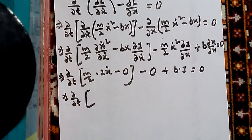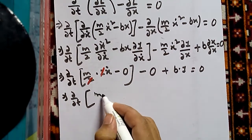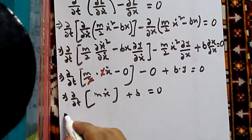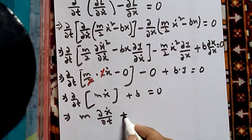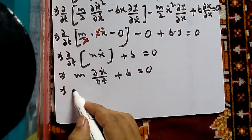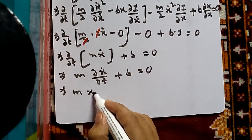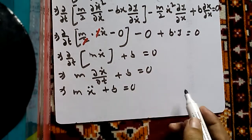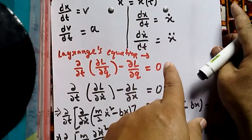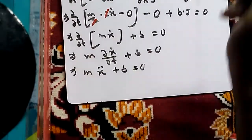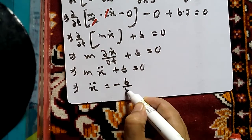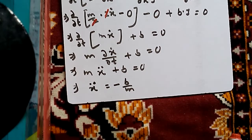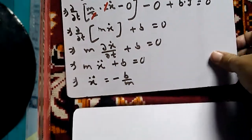The 2s cancel, giving d/dt (m · x-dot) + b = 0. Since m is a constant, this becomes m · dx-dot/dt + b = 0. Now dx-dot/dt can be written as x-double-dot, so we have m · x-double-dot + b = 0, which gives x-double-dot = −b/m.